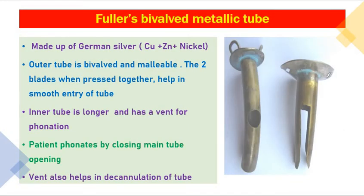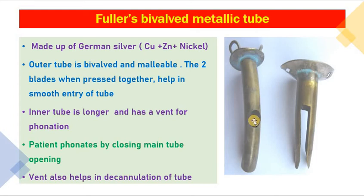Next is Fuller's bivalved metallic tracheostomy tube, made of German silver containing copper, zinc, and nickel. It is more malleable than Jackson's metallic tube. The two blades, when pressed together, allow smooth entry without requiring a separate obturator. The inner tube is longer and has a vent for phonation — which is lacking in Jackson's tube. When the patient closes the main tube opening, they can phonate. The vent also helps in decannulation: the outer part of the tube is closed and the patient breathes toward the larynx and through the nose.